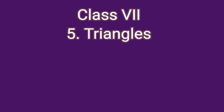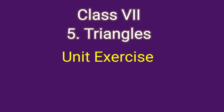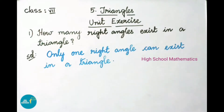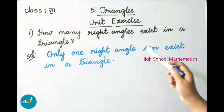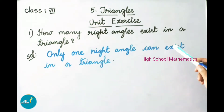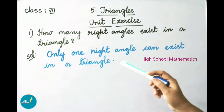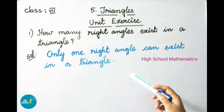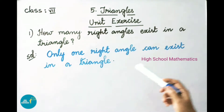Hello everyone, welcome to High School Mathematics channel. Today we are going to learn Class 7 Chapter 5 Triangles unit exercise. Question number one: how many right angles exist in a triangle? Solution: only one right angle can exist in a triangle.